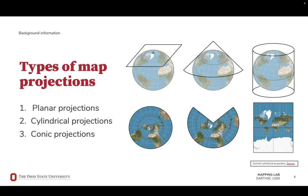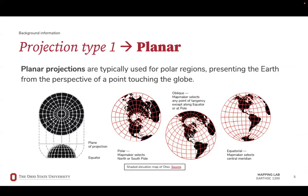Shown here is a map projection we are all familiar with, the Mercator projection, a type of cylindrical projection. The first type of projection is the planar, also known as the azimuthal projection. This is the most straightforward example where a flat plane is placed on the Earth at some point, and the surface of Earth is represented directly on this plane. This is the orthographic projection, which is exactly how the Earth's surface would look from space.